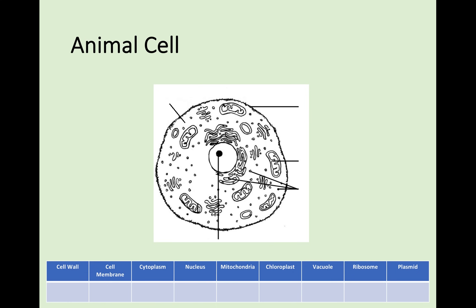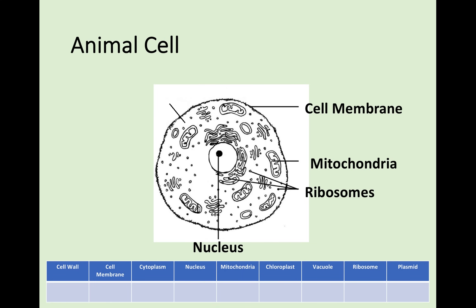In your animal cell you start off with, around the side, a structure called a cell membrane. Working around from the right, this strange almost oval-like object is called a mitochondria, and the little black dots that you often find are called ribosomes. In the middle of the cell, often coloured black, is the nucleus, and the jelly-like liquid that fills in the gap between all of these is called the cytoplasm.